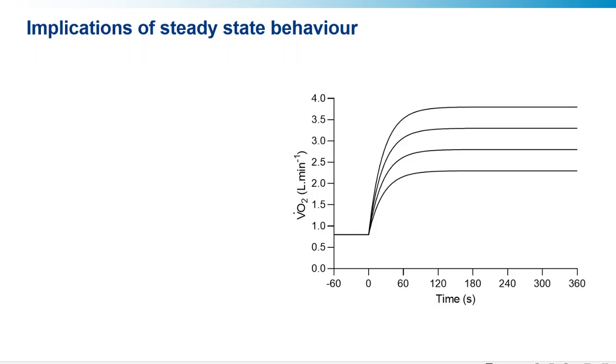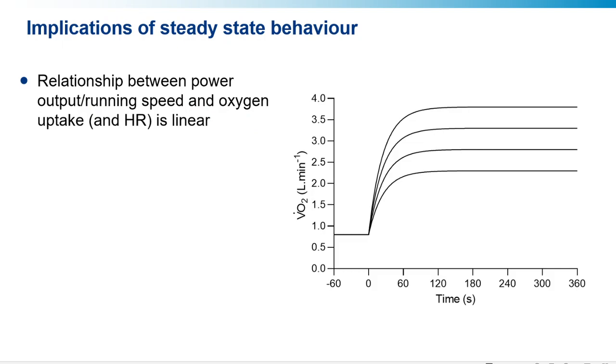Some of the implications of steady state behavior include first and foremost the fact that the relationship between power output and running speed, and oxygen uptake and indeed heart rate, is linear. I can show that here with this plot of moderate intensity exercise responses. I've assumed the kinetics are the same in each case, and all I've done is increase the work rate. So here we have 150 watts, 200 watts, 250 watts, and 300 watts.